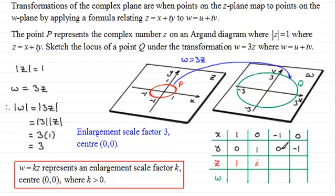For minus 1, 0, we just get the real number minus 1. And for 0, minus 1, this point here, we get the complex number minus i.